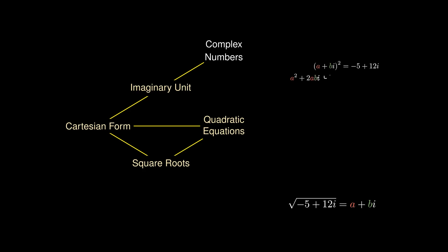We can expand the left-hand side and replace i² with -1. Now we have a complex number on the left equaling a complex number on the right. The only way this is possible is if corresponding parts are equal: the coefficient of i, that is 2ab, must equal 12, giving b = 6/a.